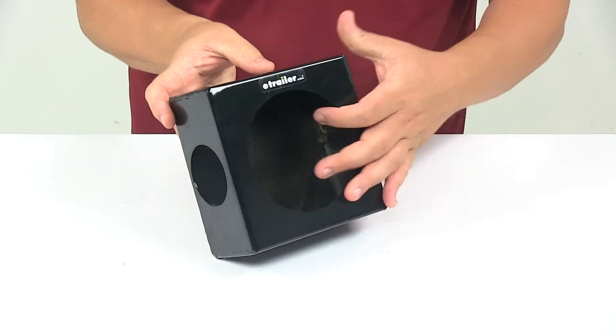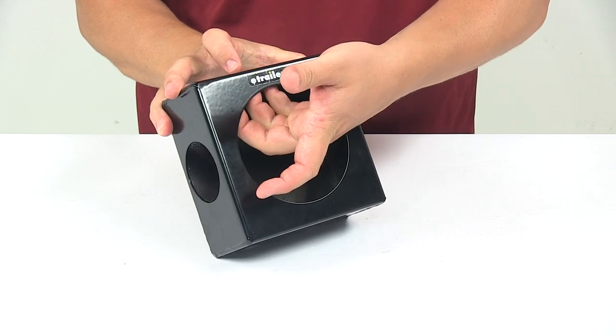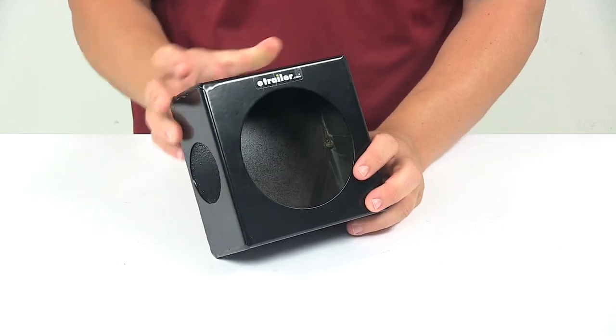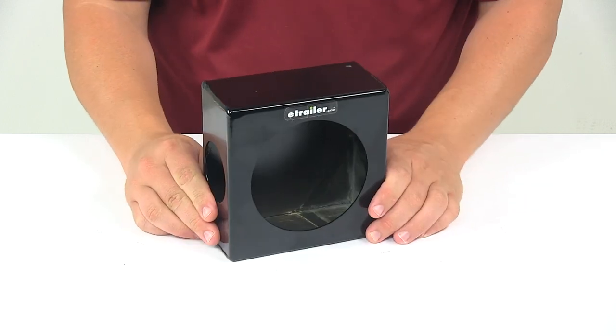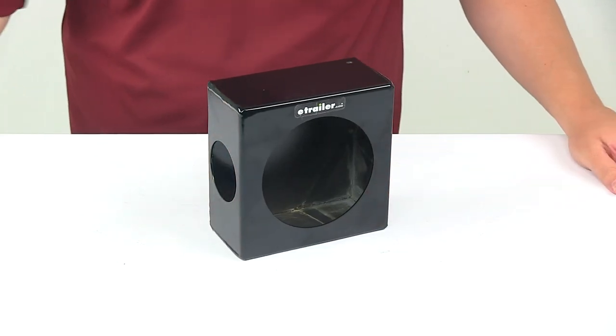And then the internal depth from the back of the box to the inside of the front face is two and thirteen sixteenths inches deep. That's going to do it for today's look at the taillight mounting box.